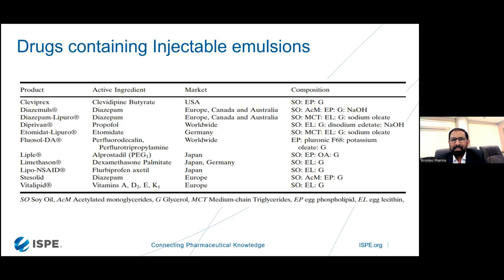Some excipients used are basically oil and water phase components such as soybean oils and acetylated monoglycerides. The excipients we use depend upon the formulation and the route of administration — whether IV, IM, or subcutaneous. The decision depends upon the route of administration, the dose, and the pharmacokinetics of the APIs.